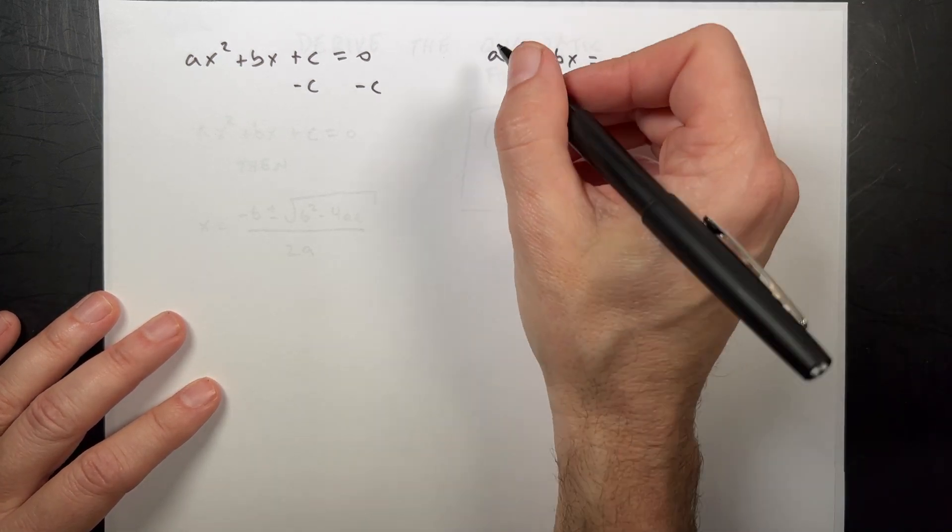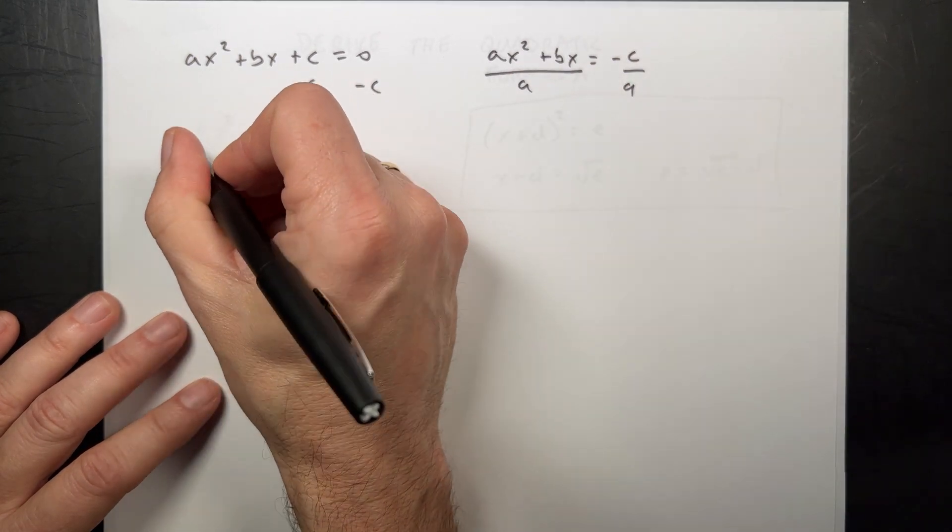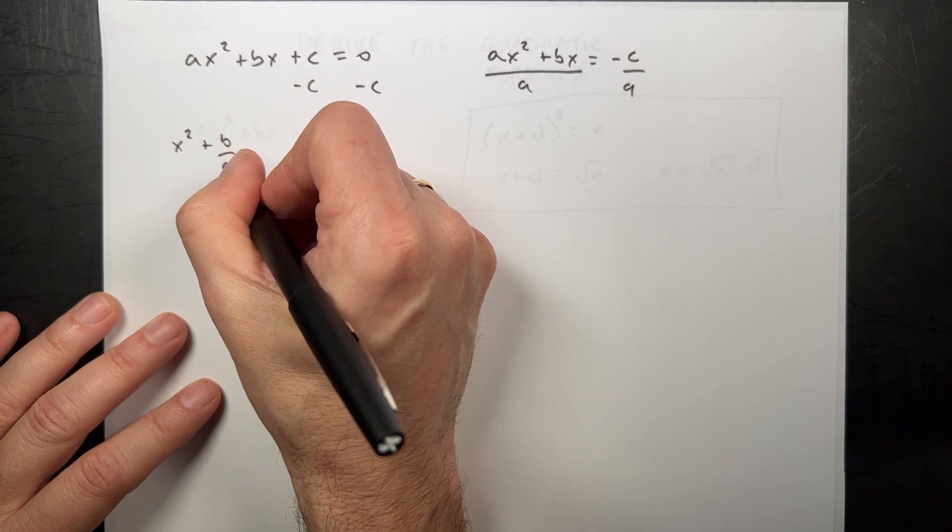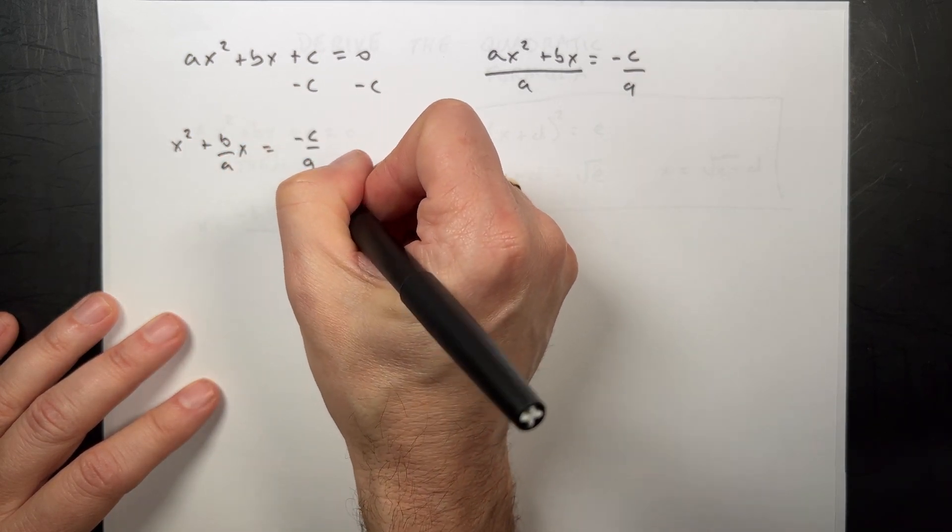Now I want to divide both sides by a. So I'm going to divide this by a. I'm going to divide that by a. Now I get x squared plus b over a times x equals negative c over a.